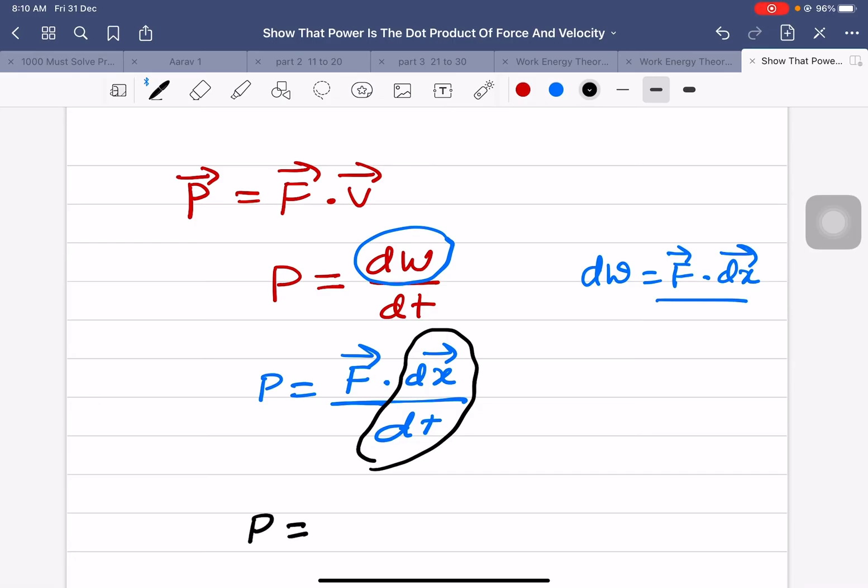Therefore, power equals F dot V. Power equals F dot V. Very simple. Thank you very much.